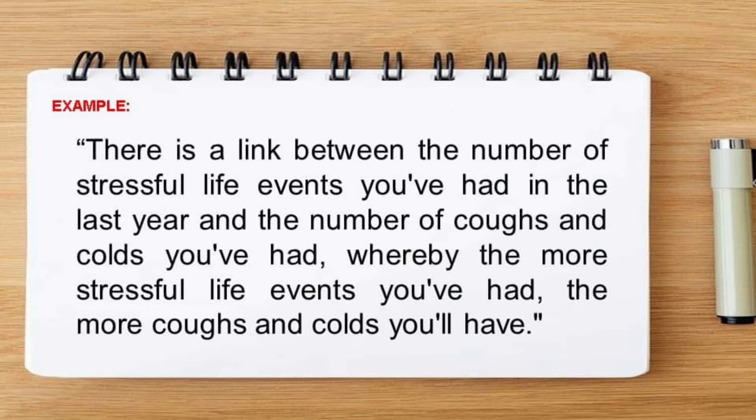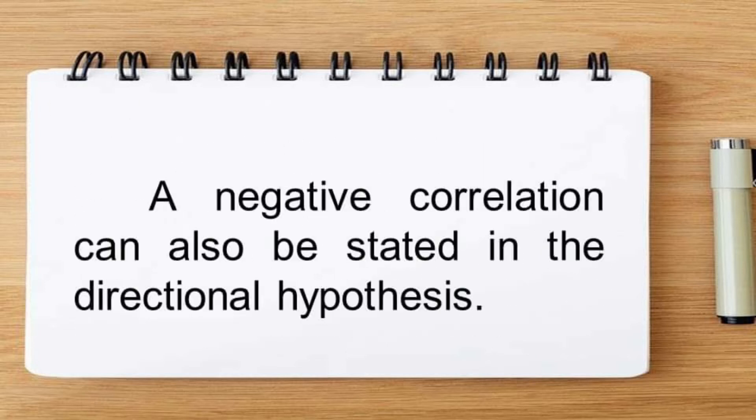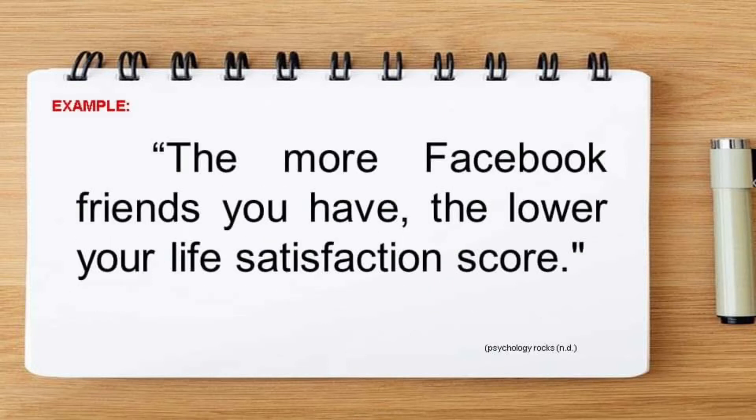For example: there is a link between the number of stressful life events you have had in the last year and the number of coughs and colds you have had, whereby the more stressful life events you have had, the more coughs and colds you will have. A negative correlation can also be stated in the directional hypothesis. For example: the more Facebook friends you have, the lower your life satisfaction score.